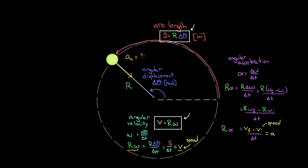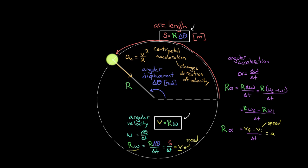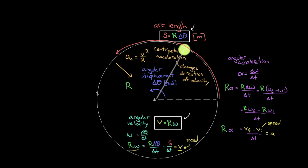The centripetal acceleration, directed inward, changes the direction of velocity. Its formula is v²/r. The quantity r·alpha, by contrast, is the change in speed per time. You don't need r·alpha if going in a circle at constant speed — in that case there's centripetal acceleration but no change in speed.